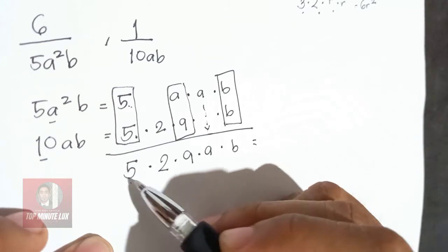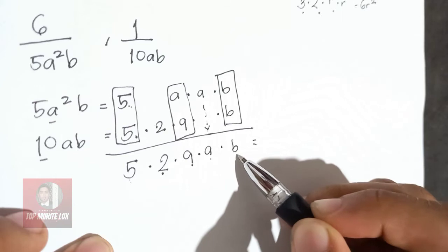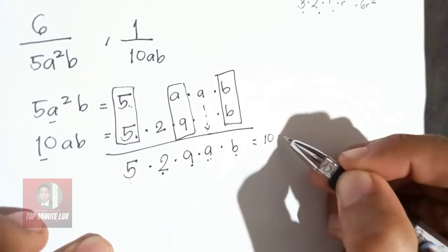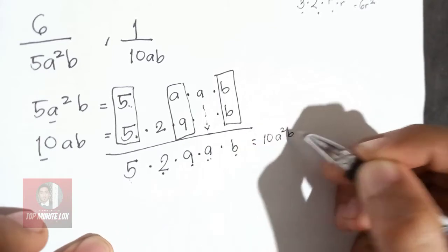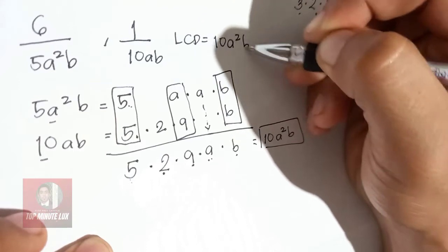So multiply, 5 times 2 will give you 10, times A, times A, times B. So 5 times 2, 10. A times A will give you A squared, and you have 1B. So the LCD is 10A squared B.